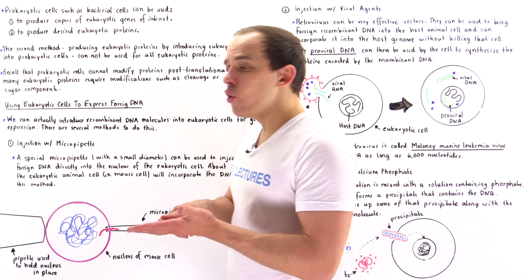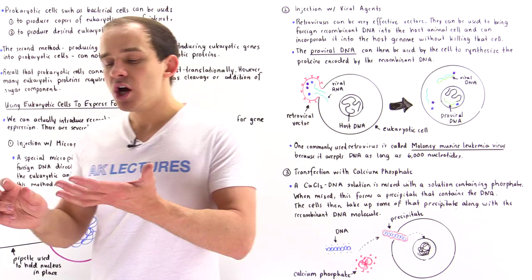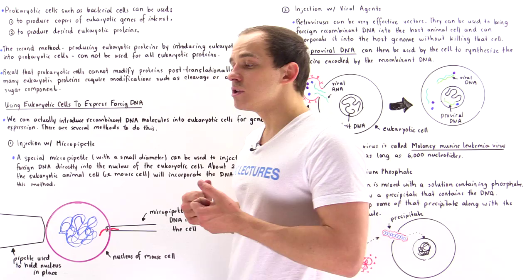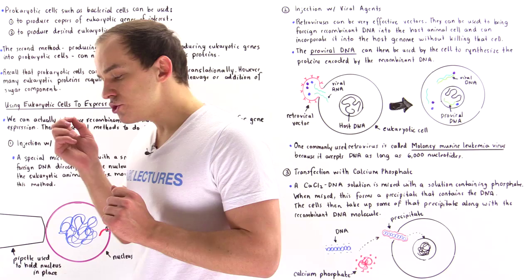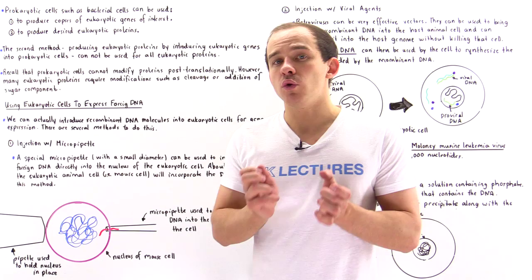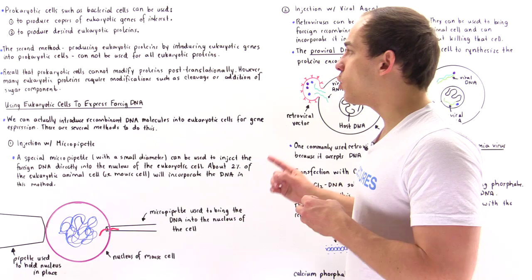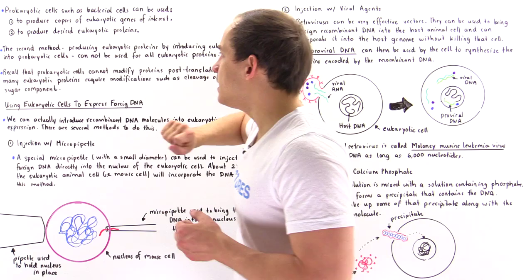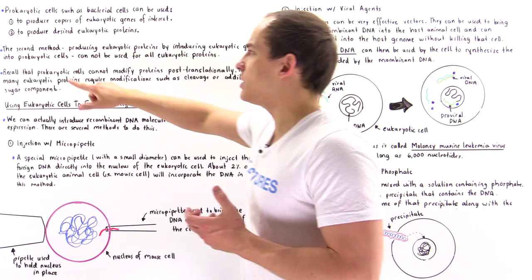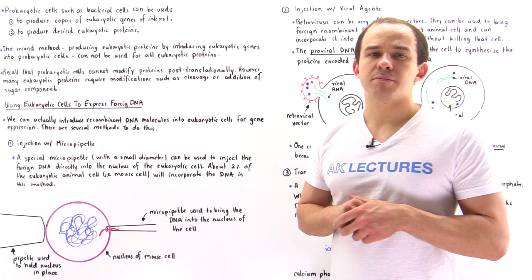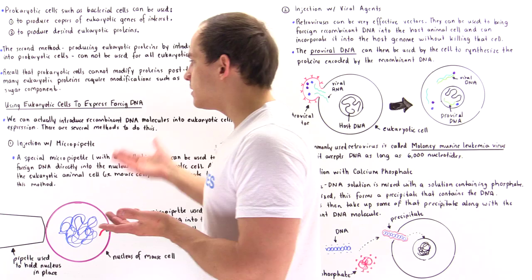What that means is we can add different types of components onto our protein — for example, sugar molecules and lipid molecules. We can also cleave proteins in eukaryotic cells post-translationally. These things cannot be done inside prokaryotic cells, because prokaryotic cells simply don't have the Golgi apparatus and other organelles to modify proteins post-translationally. Therefore, producing eukaryotic proteins by introducing eukaryotic genes into prokaryotic cells cannot be done for all eukaryotic proteins.